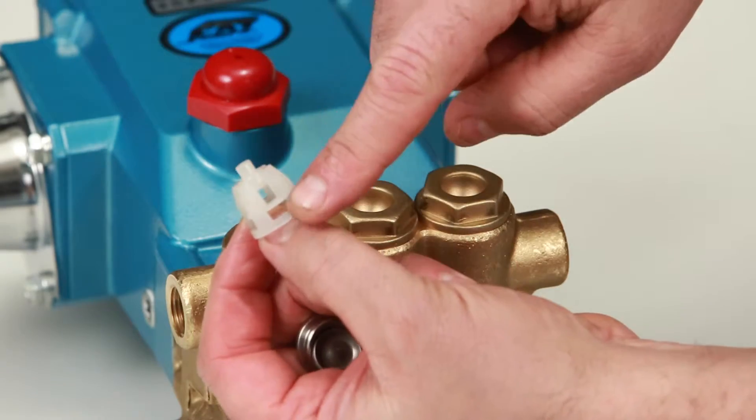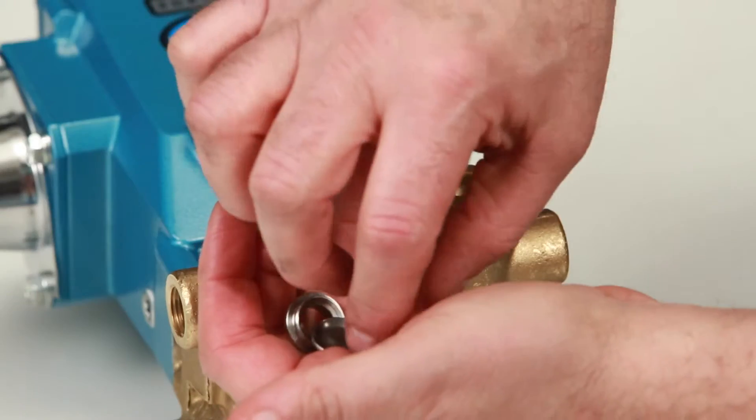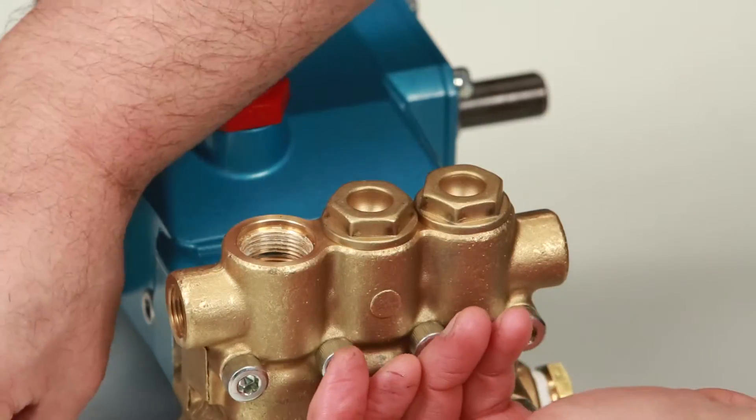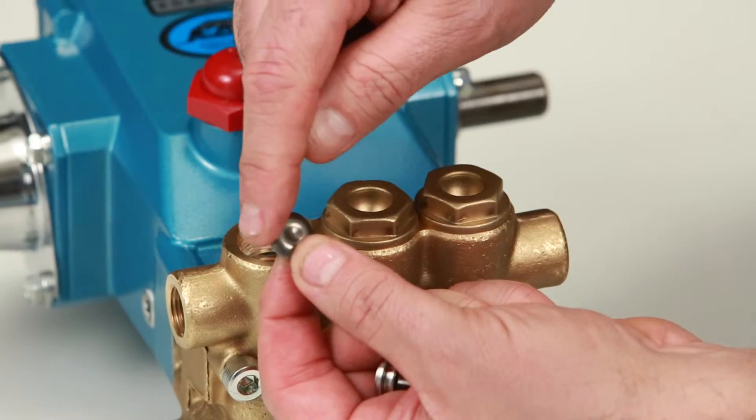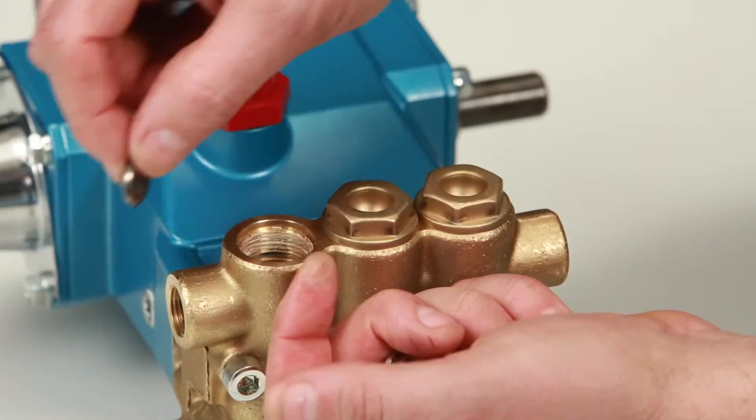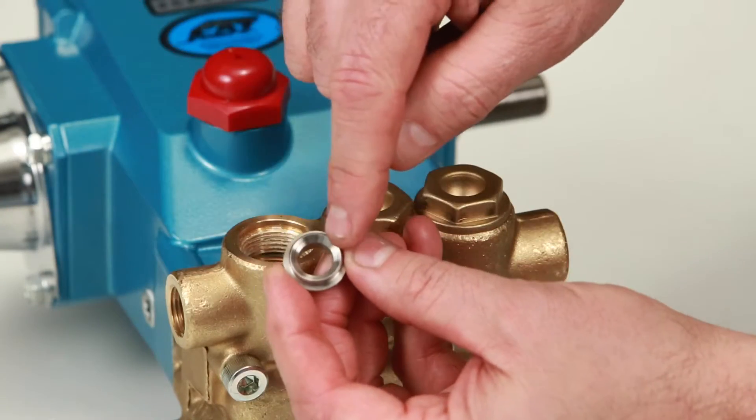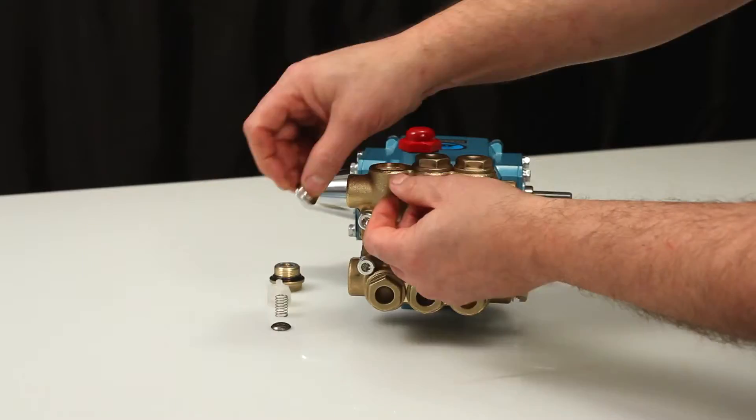Next, inspect the spring retainer for cracks, excessive wear, or damage. Inspect the spring for proper tension or any damage. Inspect the tapered surface of the valve for wear, pitting, or damage. Inspect the tapered surface of the valve seat for wear, pitting, or damage. Pitting on the valve seat or valve is an indication of cavitation.